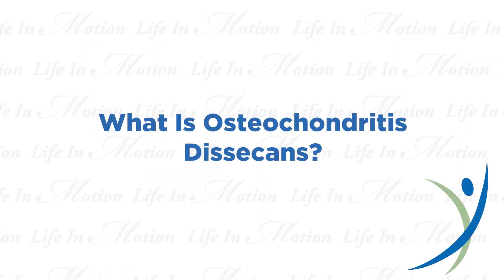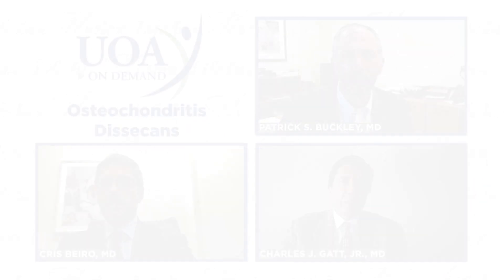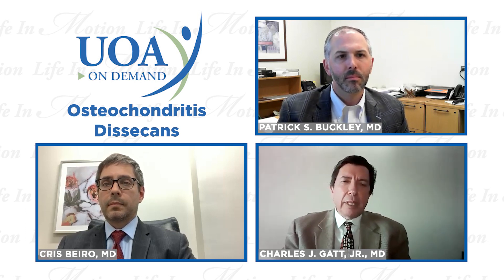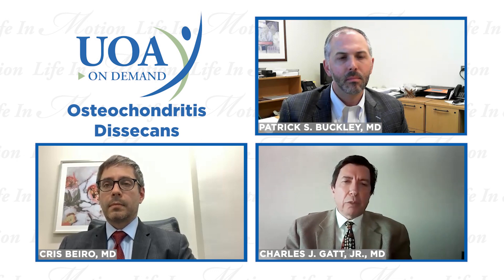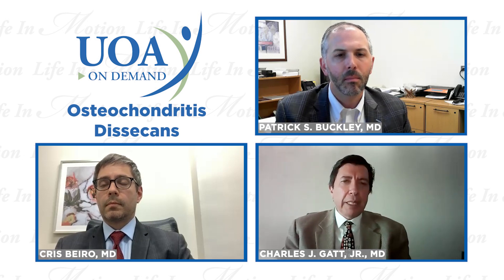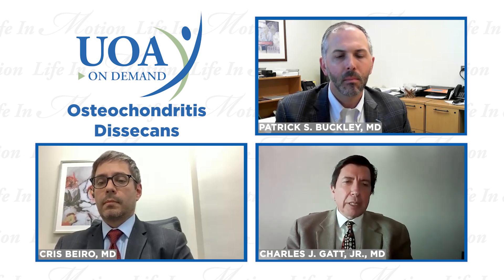Osteochondritis dissecans is something we see primarily in young adolescent athletes, but we do see it in a lot of different ages. It tends to occur most commonly in the knee and the elbow. The theory on what causes it — because we're not 100% sure — is that it's due to repetitive microtrauma that can result in a loss of blood supply to the ends of the bones, or little micro fractures in the bones that end up resulting in pieces of bone and cartilage separating from the end of the bone. It does lead to mechanical-type pain in the joint. You can start off with achy pain, but then patients get catching or blocking sensations, and that's usually what brings them to the office.